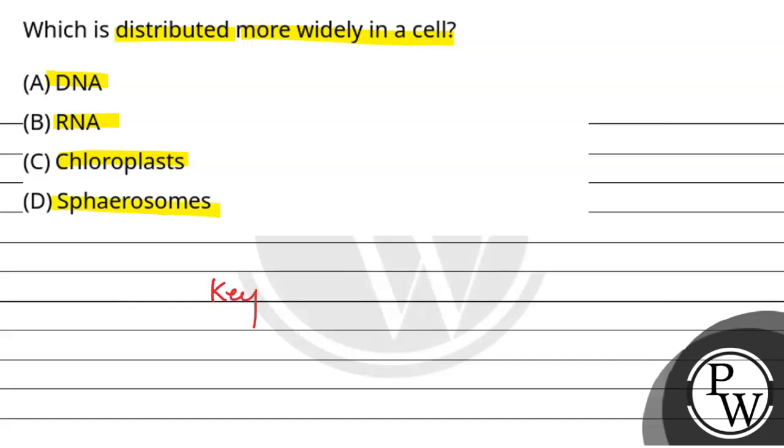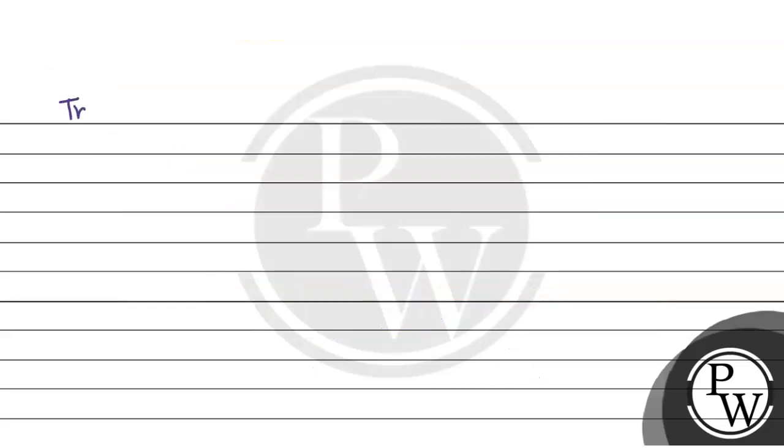So the key concept for this question is nucleic acids. Nucleic acids basically in our cell are two types. First is DNA and second is RNA. In the transcription process, DNA is basically converted to RNA.